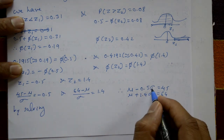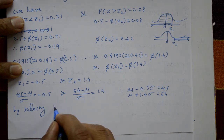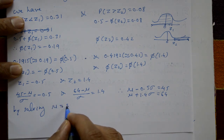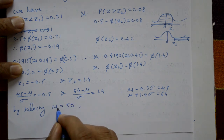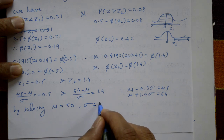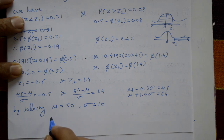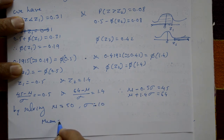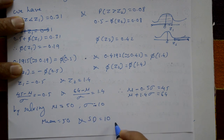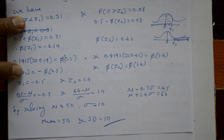Solving these two simultaneous equations, mu equals 50 and sigma equals 10. So the mean is 50 and the standard deviation is 10. This is the required solution.